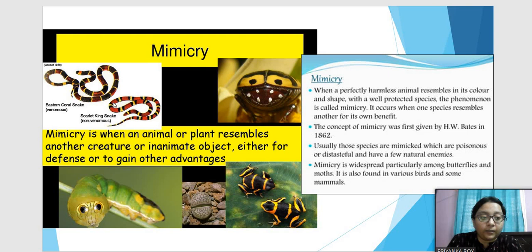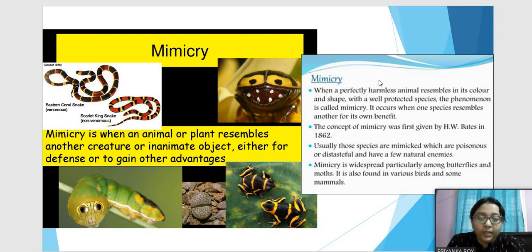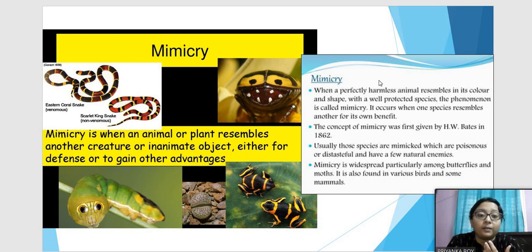When a perfectly harmless animal resembles in its color and shape a well-protected species, that is called mimicry. Usually, the species that are mimicked are poisonous or distasteful, so predators leave them alone — the predator is alarmed and will not attack. Mimicry is very common among animals and is seen in butterflies, birds, mammals, and others.